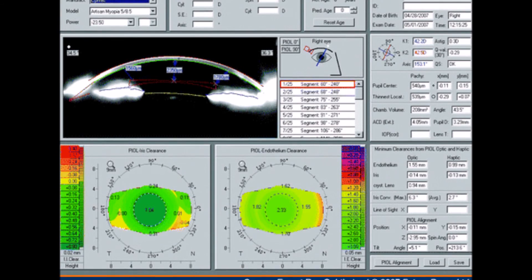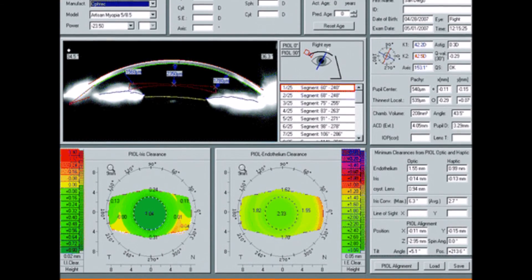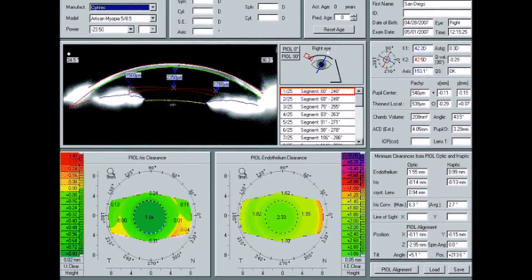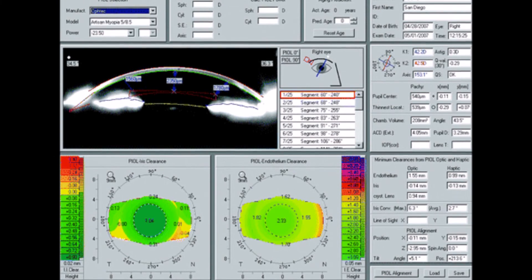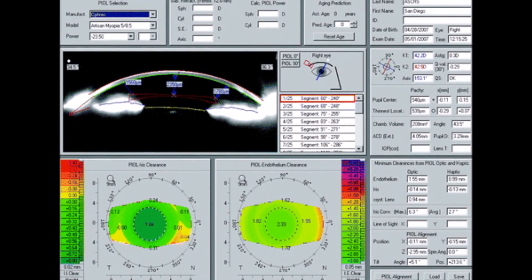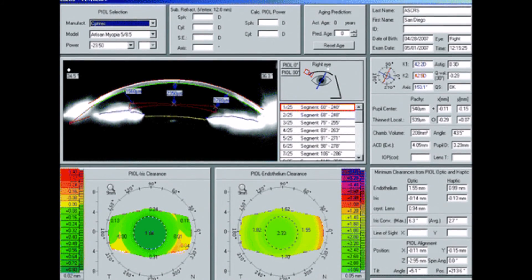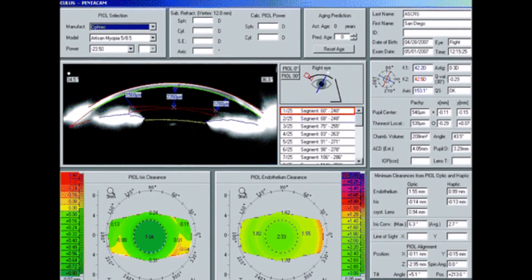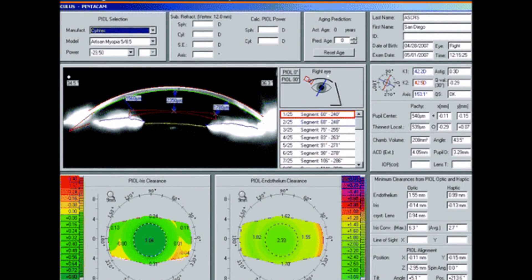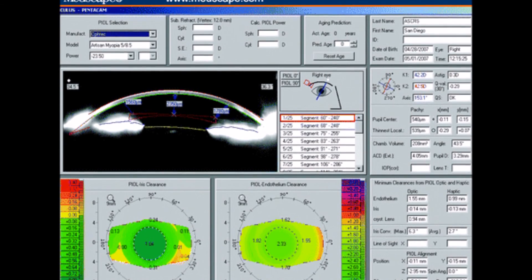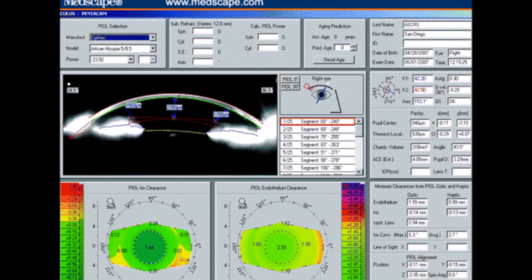Unfortunately, Scheimpflug imaging does not image the iridocorneal angle with much clarity as the blue light scatters at the scleral tissue. Consequently, structures at the angle and posterior to the iris are not optimally imaged. Other modalities such as ultrasound biomicroscopy are much better at imaging the iridocorneal angle.